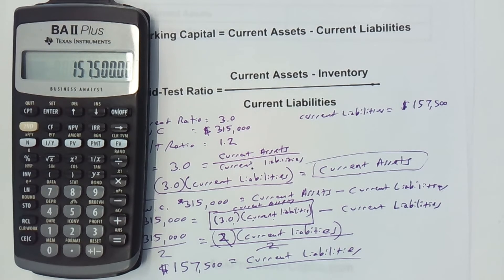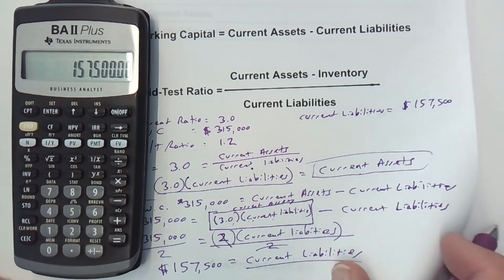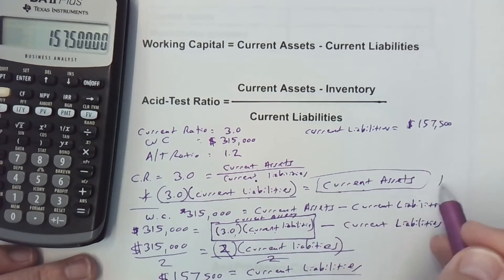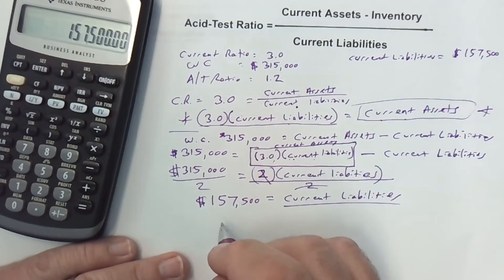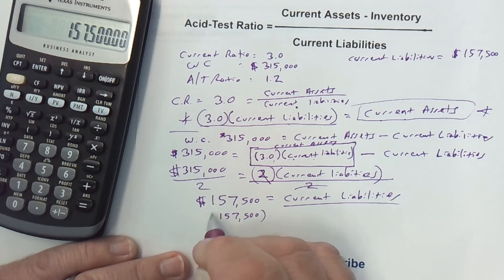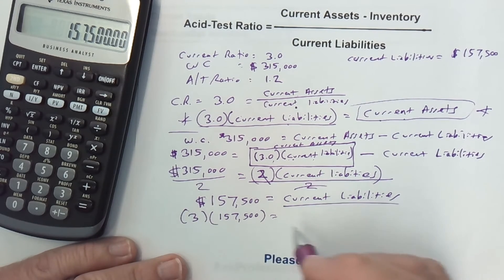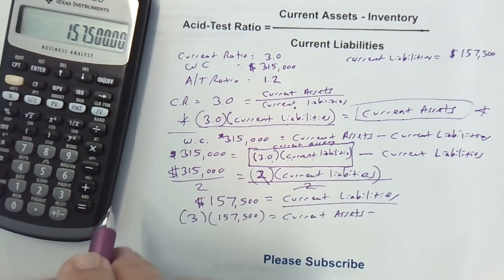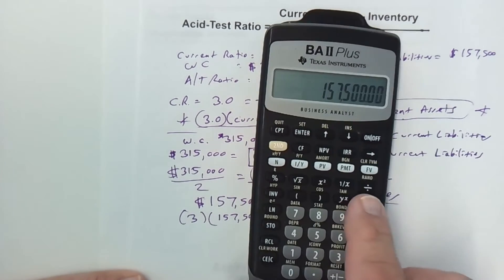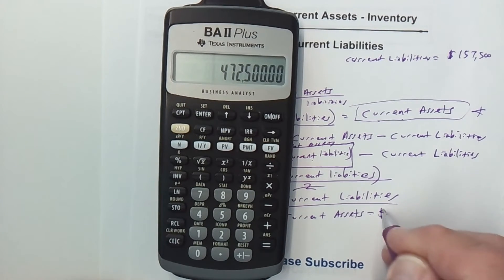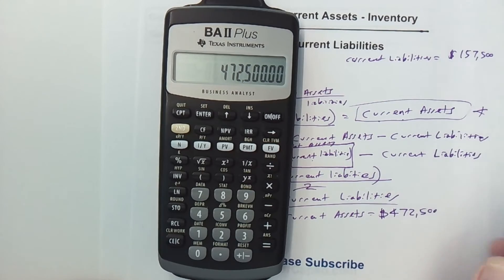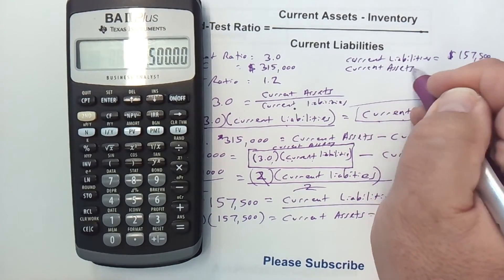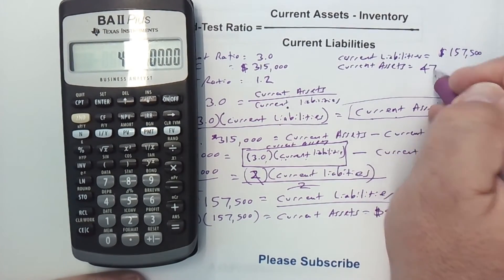Now I know current liabilities. Can I find current assets? Yes, because we found earlier that current assets equal 3 times current liabilities. All I need to do is take current liabilities, which is $157,500, and multiply it by 3 to get current assets. Multiplying $157,500 by 3 gives me $472,500. That's our current assets. So, current assets equal $472,500.